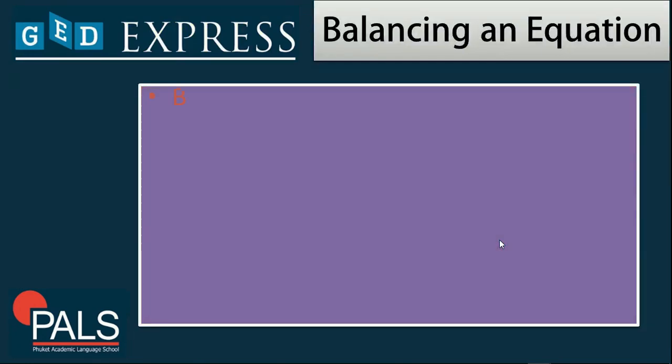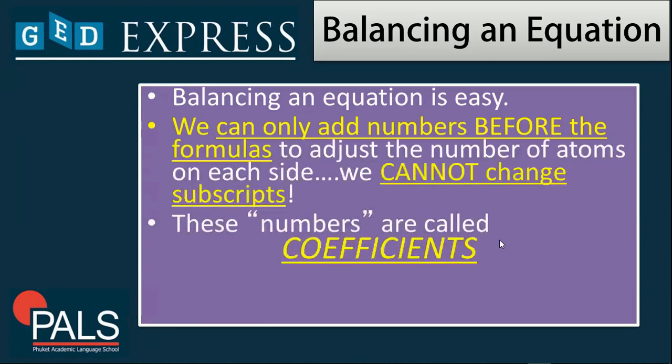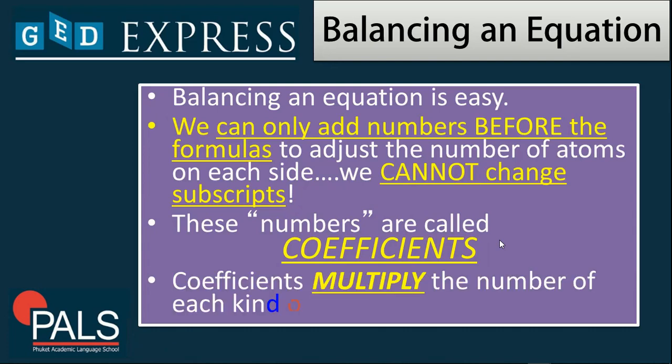In balancing an equation, we can only add numbers before the formulas to adjust the number of atoms on each side, and we cannot change subscripts. These numbers are known as coefficients, based on what I have discussed in my previous videos. Coefficients are multiplied by the number of each kind of atom in a formula.